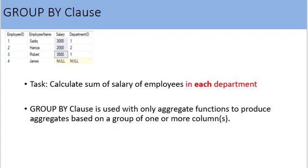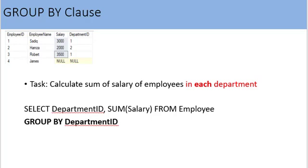GROUP BY clause is used with aggregate functions and makes it possible to produce aggregates over a group of rows instead of all rows in a table. For example, to get the sum of salary for each department, we group data by the department_id column. Here is the SQL statement: SELECT department_id, SUM(salary) FROM employee GROUP BY department_id.